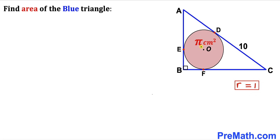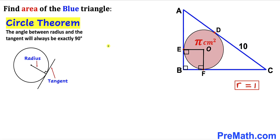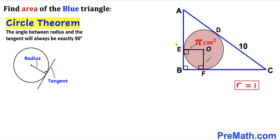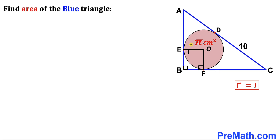Next, let's connect center O with points E and F. Recalling the circle theorem: the angle between a radius and a tangent line is always 90°. In our case, the angles at E and F are each 90°, since OE and OF are radii and the sides are tangent lines.